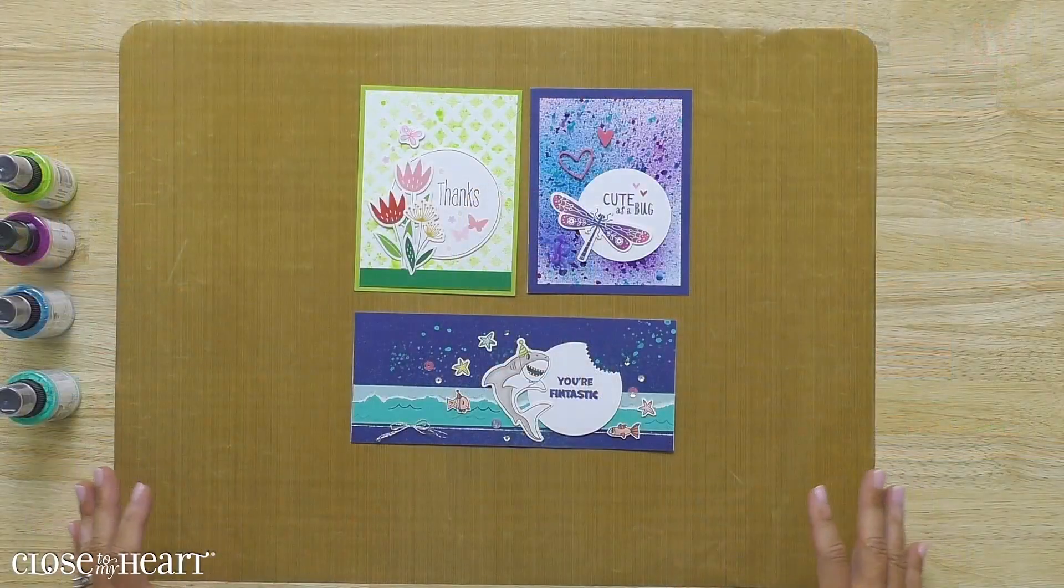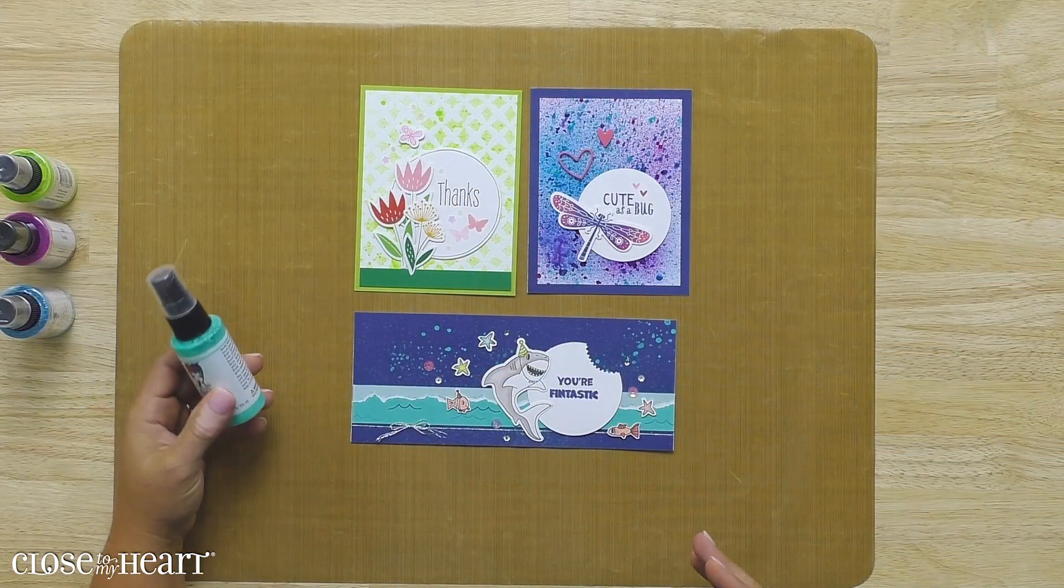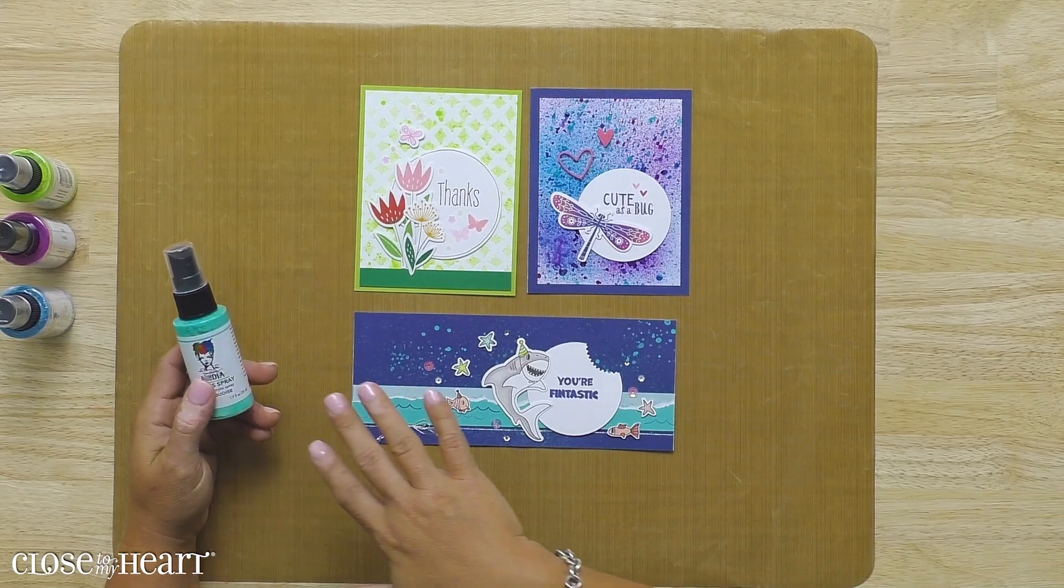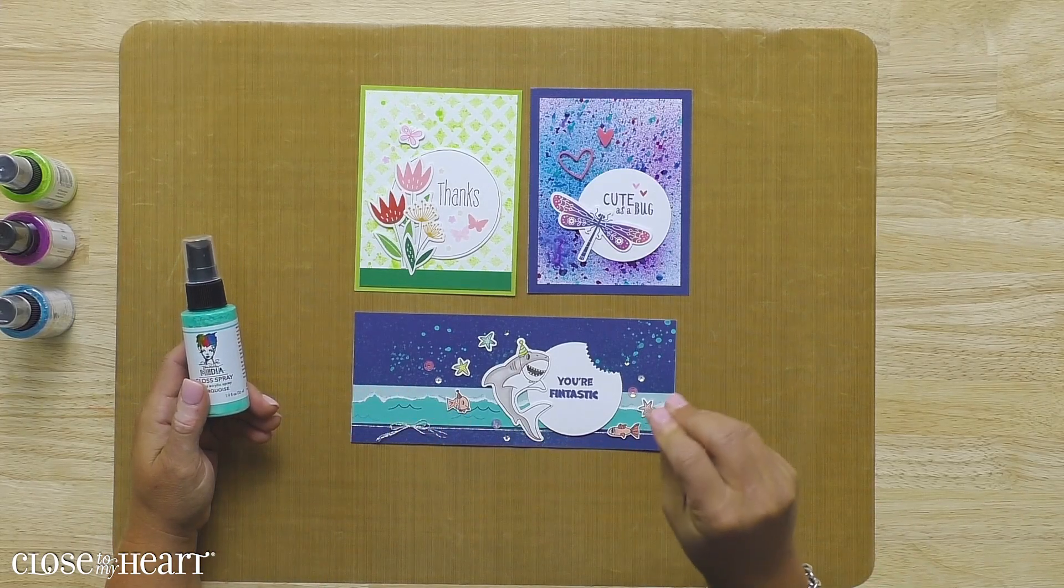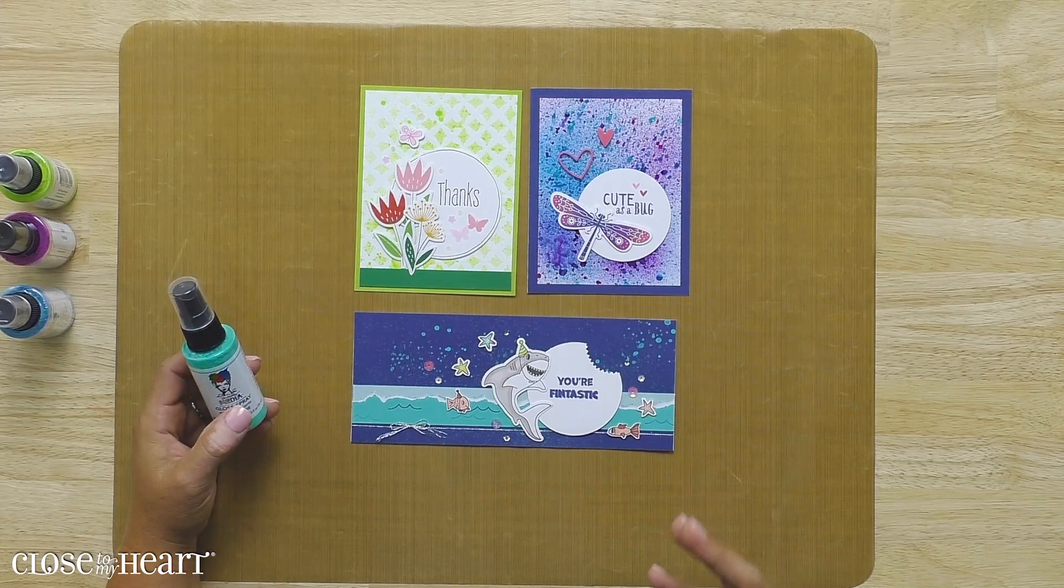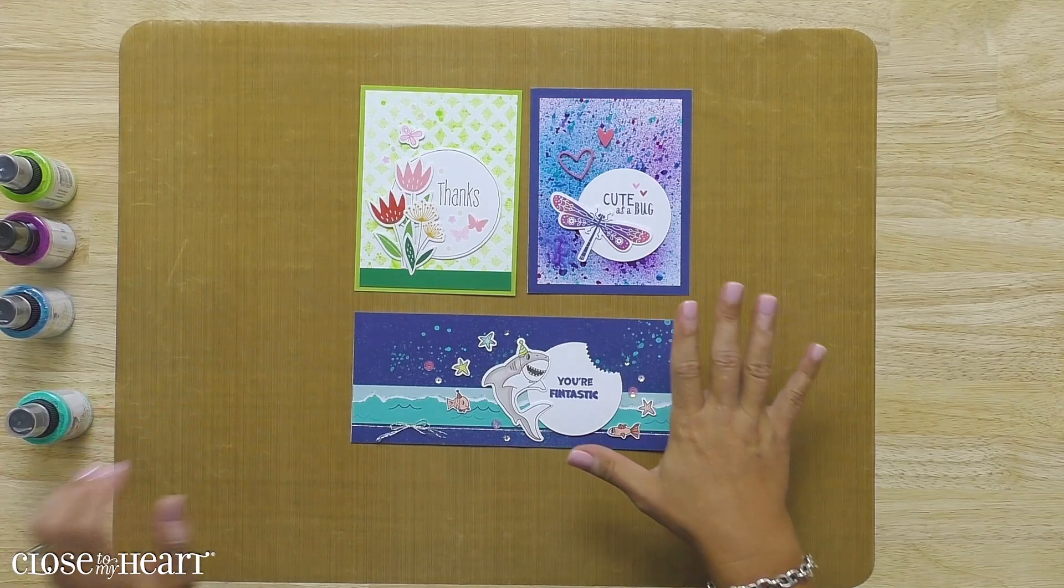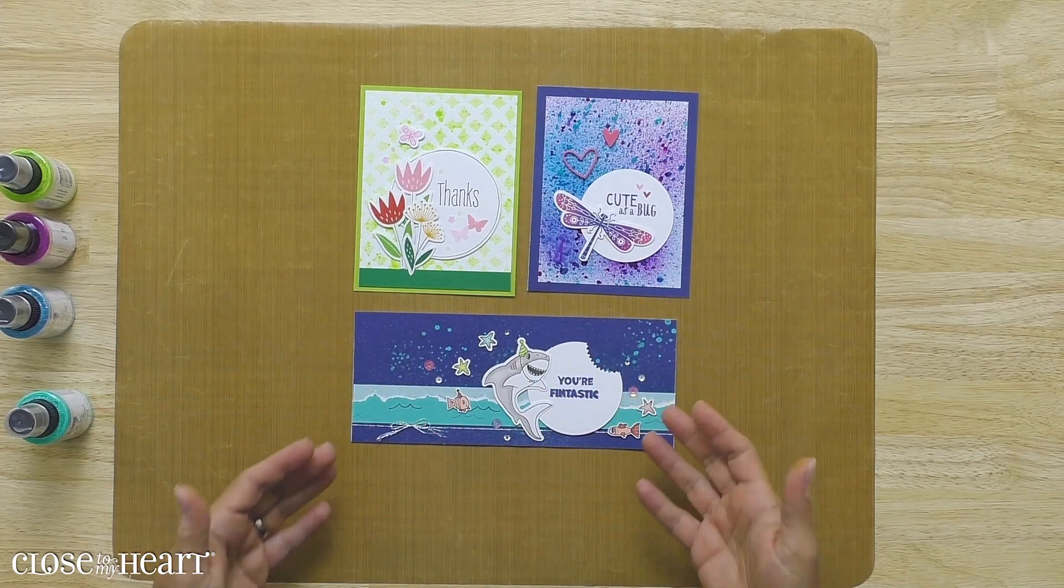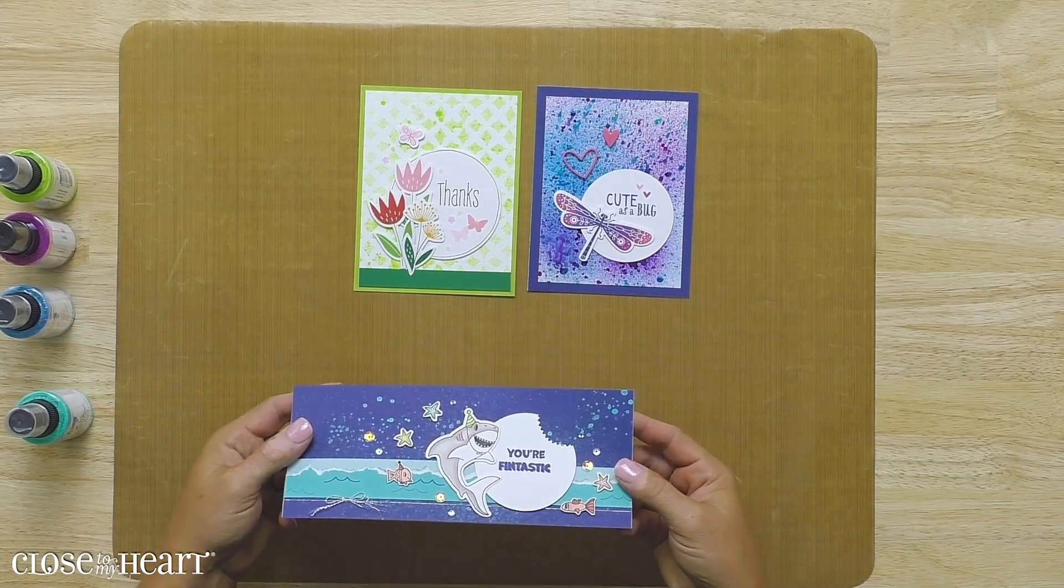So today we're going to talk specifically about gloss sprays. Gloss sprays are an opaque acrylic spray and they dry down with a really fun sheen to them, so they're a really awesome product to use. I've got a few sample cards here, a layout that we're going to demo, and give you some really fun ideas for how you can utilize these products.